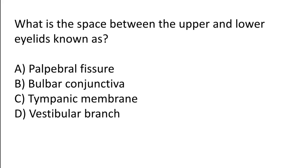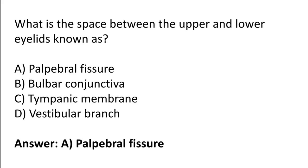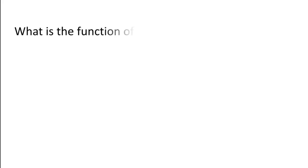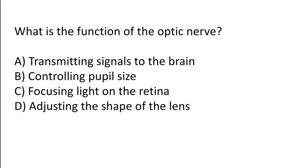What is the space between the upper and lower eyelids known as? Palpebral fissure, bulbar conjunctiva, tympanic membrane, or vestibular branch. The correct answer is option A — the space between the upper and lower eyelids is known as the palpebral fissure.